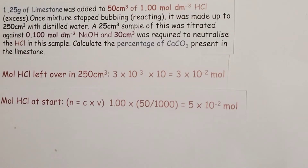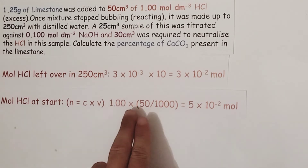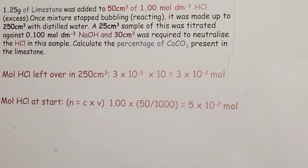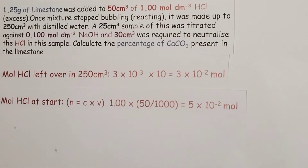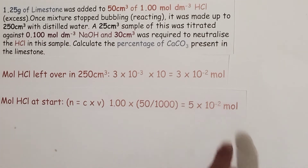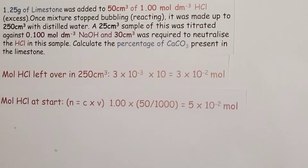Now we can work out how much hydrochloric acid was in the excess at the start. That would be moles equals concentration times volume: 1 times 50 over 1000, converting centimetres cubed into decimetres cubed. That gives us 5 × 10⁻² moles of hydrochloric acid in excess at the start of the reaction.